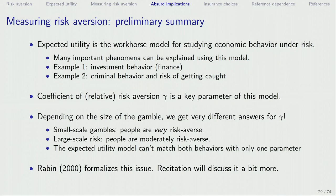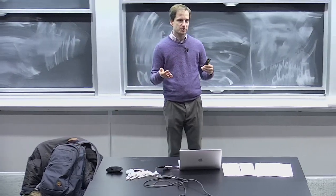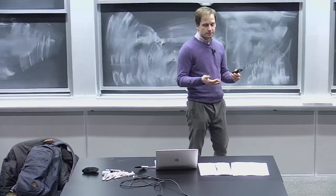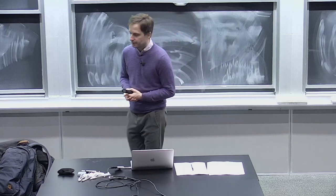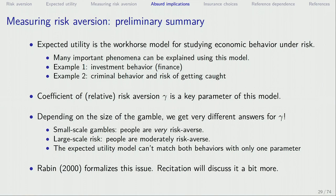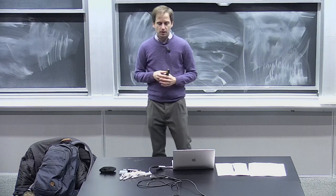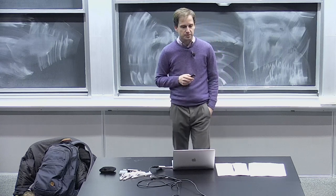I showed you Matthew Rabin's calibration theorem, which essentially calibrates and shows in a fairly compelling way — for very minimal assumptions, just that the utility function is weakly concave — that declining small-scale gambles with positive expected value implies that people make absurd choices when the gambles become larger. The recitation will discuss this in more detail and walk through the specific example more slowly.